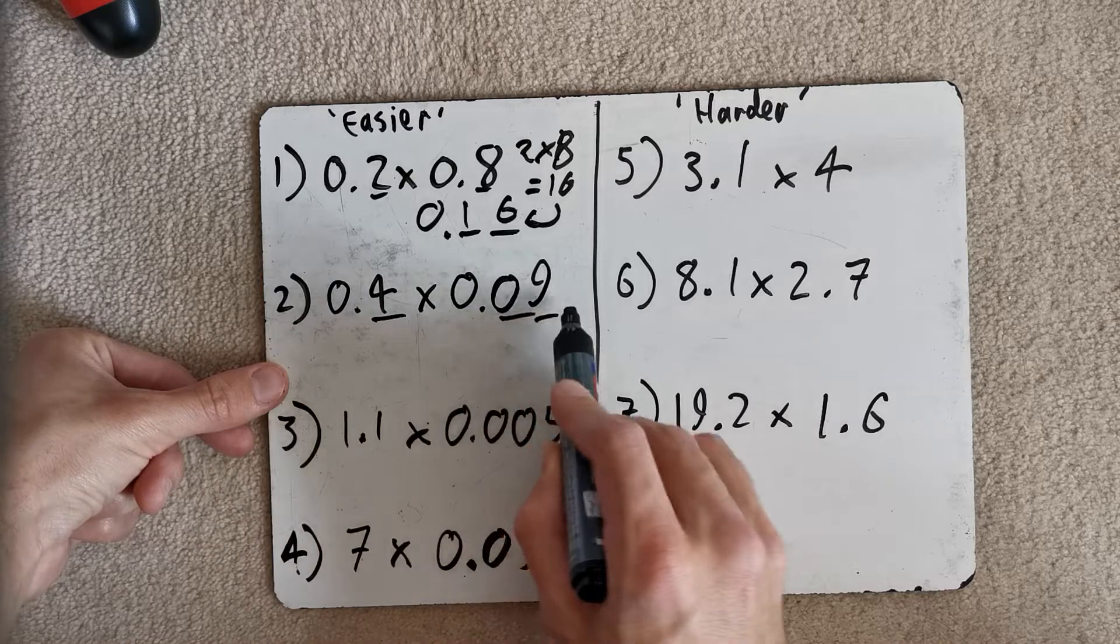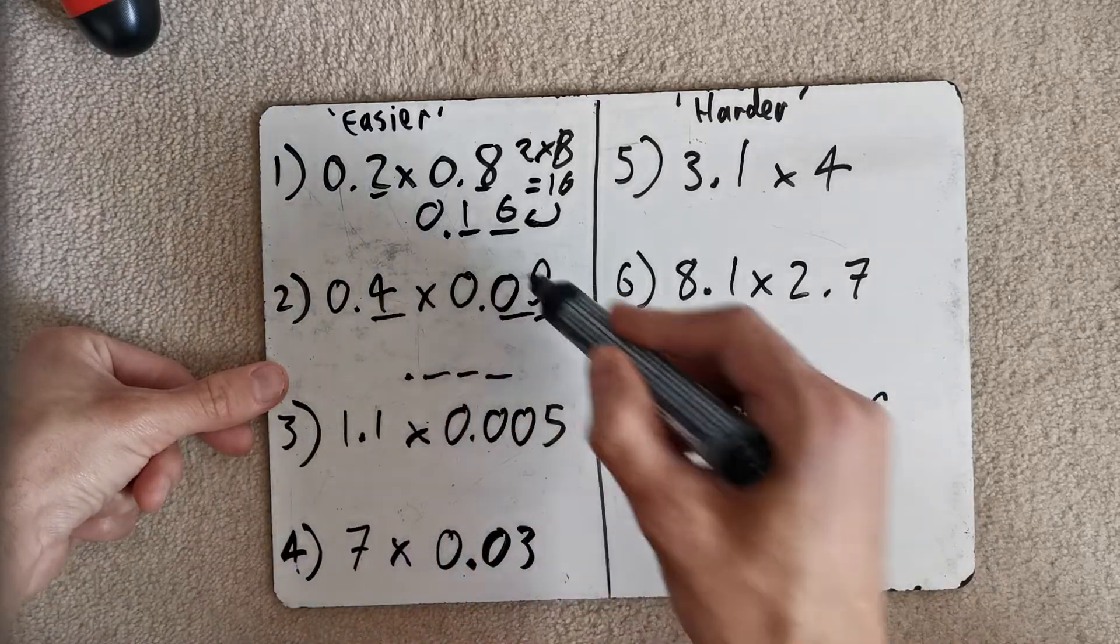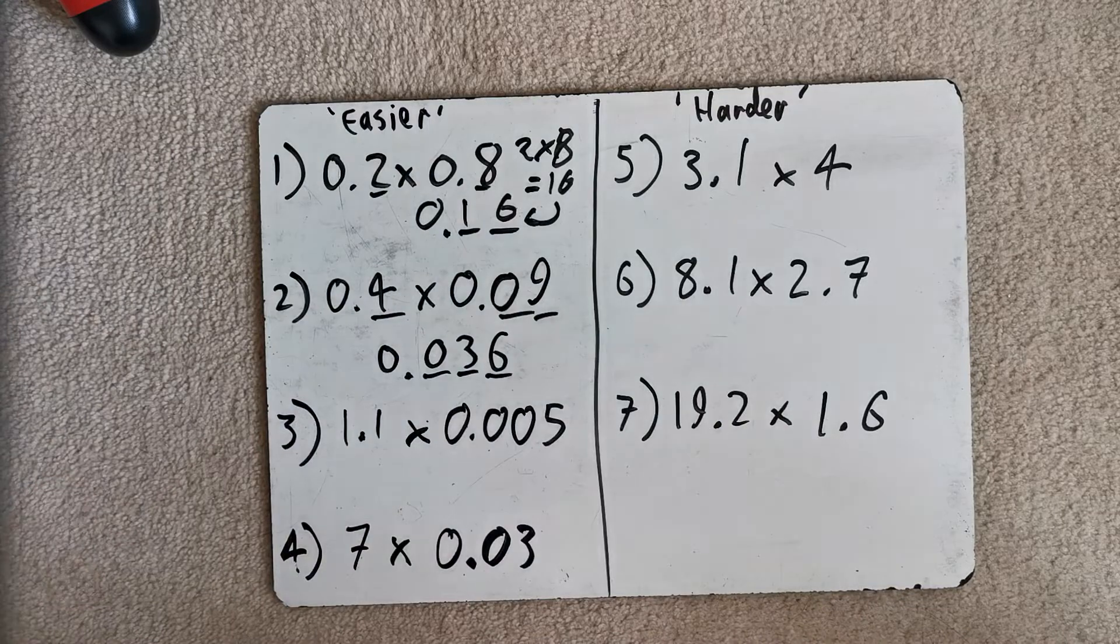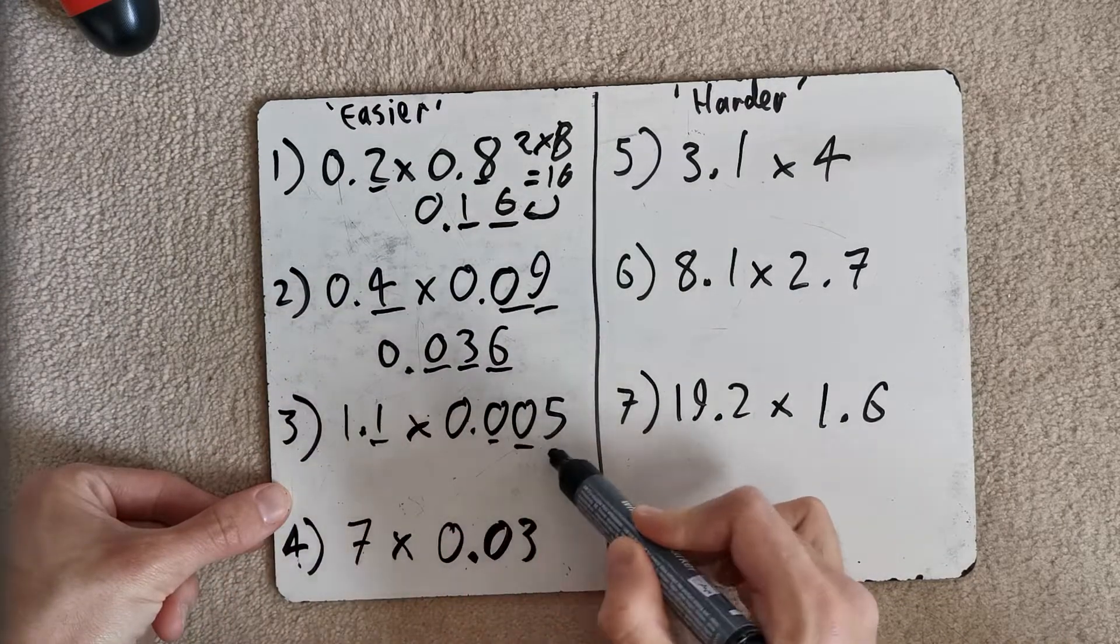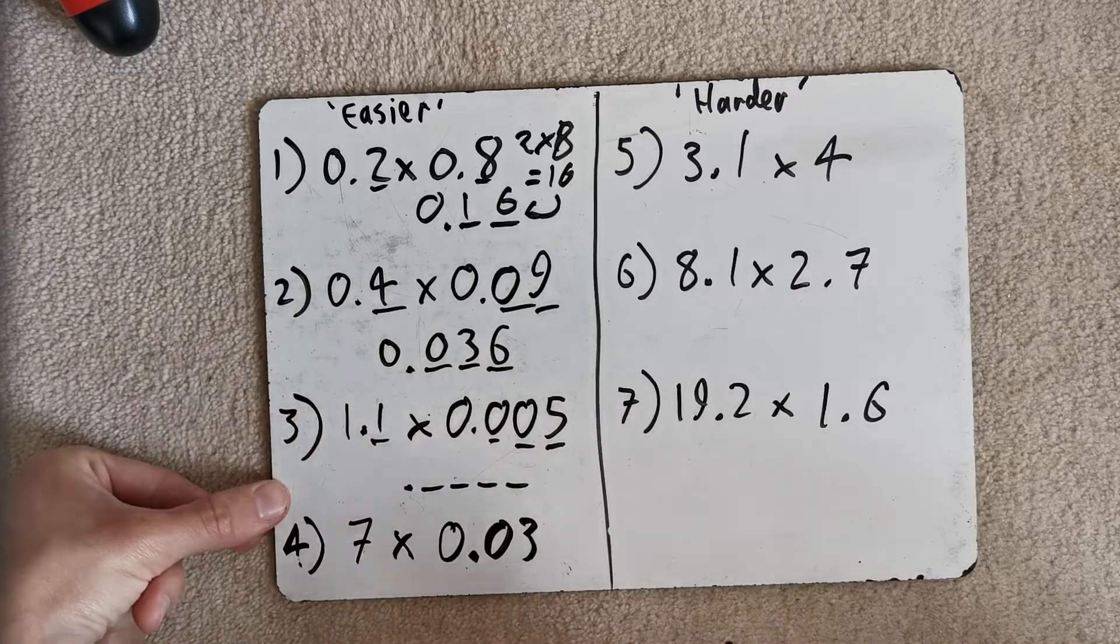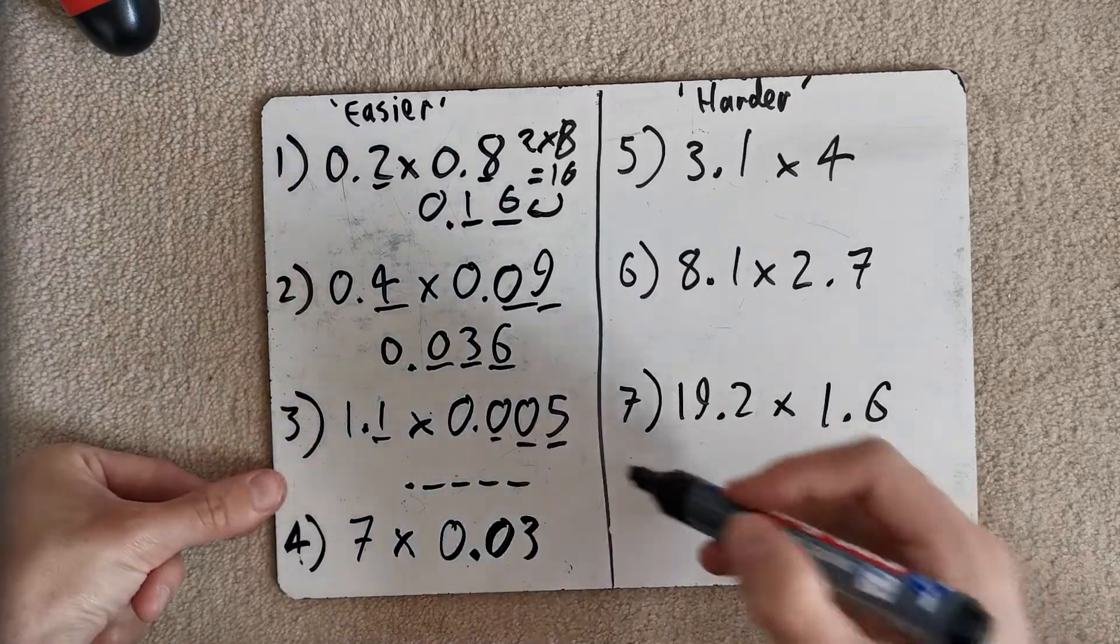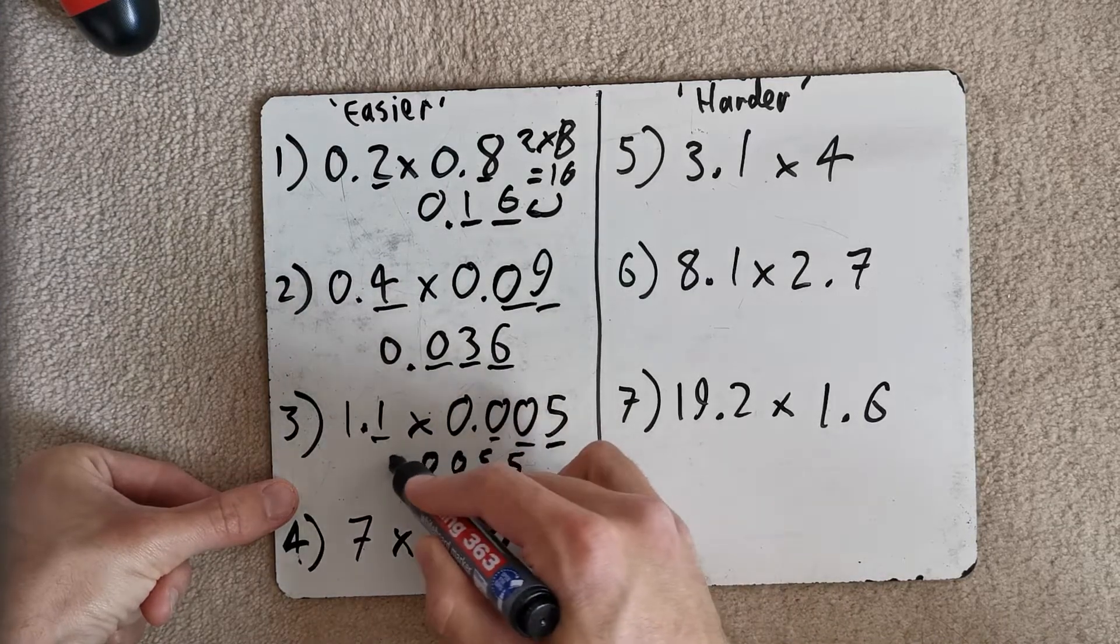1, 2, 3 decimal places in the question. 1, 2, 3 in the answer. What's 4 times 9? 36. 6 goes there. 3 goes there. The blanks are going to be filled with zeros. 1, 2, 3, 4 decimal places in the question. 1, 2, 3, 4 in the answer. Okay.